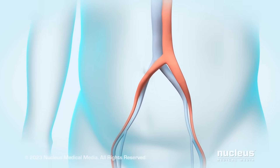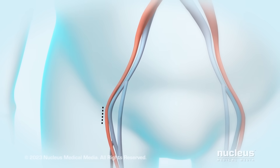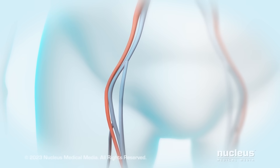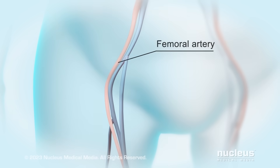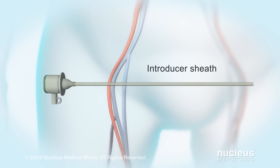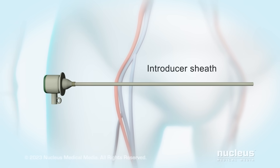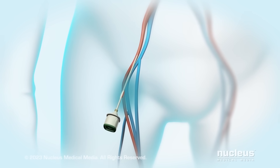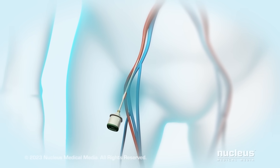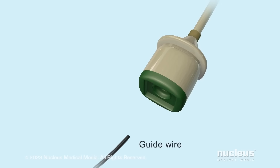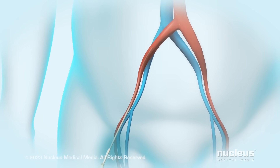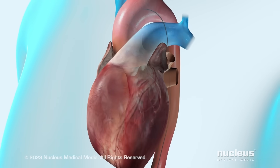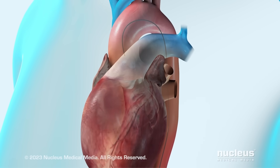At the beginning of your procedure, your doctor will make a small incision in your groin. After creating an opening in a blood vessel called the femoral artery, your doctor will insert a flexible tube called an introducer sheath. Through the sheath, your doctor will insert a flexible guide wire into your femoral artery. The guide wire will be passed through your femoral artery all the way up to your aorta.